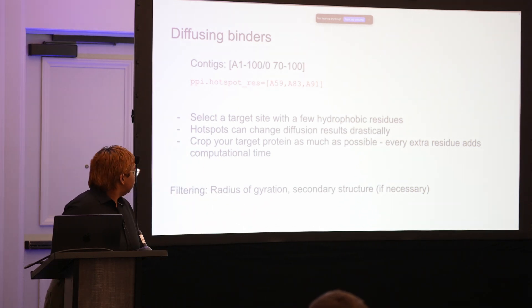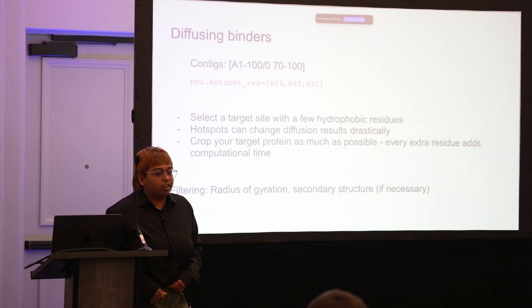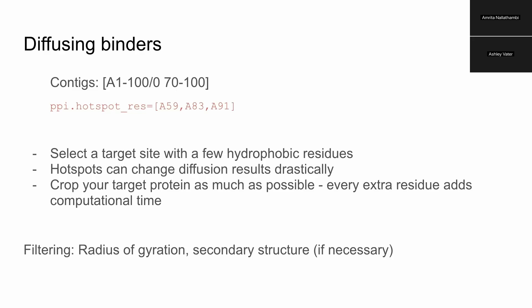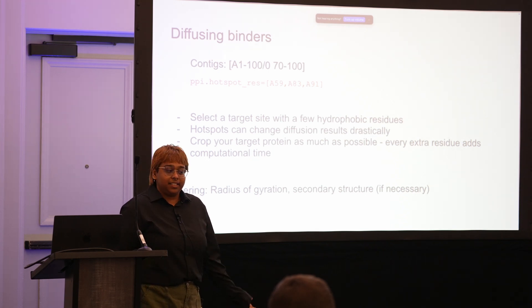For filtering we usually in our lab look at radius of gyration. This is essentially a metric that tells you how globular a protein is, and we use this to filter out the long helices outputs that diffusion binder always gives us. And then finally secondary structure—sometimes diffusion will just give me a loopy mess for a binder, so to filter some of those designs out we use a secondary structure filter.